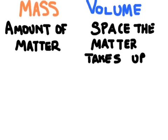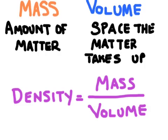Density is the amount of matter per unit of volume, and we can calculate density using the following equation: density is equal to the mass of an object divided by its volume.